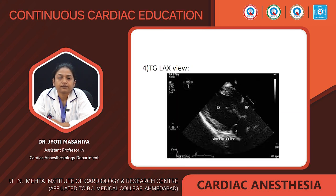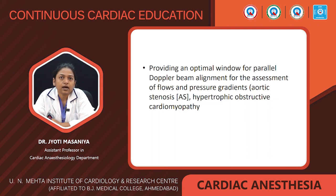The next view is the transgastric long-axis view. This view is obtained by rotating the multiplane angle to 90 to 120 degrees from the transgastric mid-short axis view. This view is important because it provides an optimal window for parallel Doppler beam alignment for assessment of flow and pressure gradient in aortic stenosis or hypertrophic obstructive cardiomyopathy.